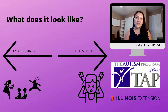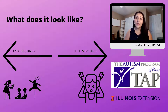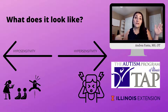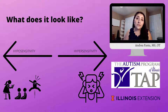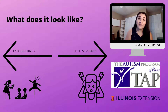So what does it look like? SPD is a broad spectrum with levels of severity and it can go in different directions. As you can see in the image, a person can be situated in this continuum of over-responsiveness and under-responsiveness over one sensory system or in more than one sensory system in another scale of sensitivity.